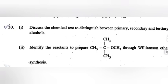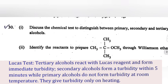Question 13, Part 1: Discuss the chemical test to distinguish between primary, secondary and tertiary alcohol. Answer: Lucas test. Tertiary alcohol reacts with Lucas reagent and forms immediate turbidity. Secondary alcohol forms a turbidity within 5 minutes, while primary alcohol does not form turbidity at room temperature. They give turbidity only on heating.